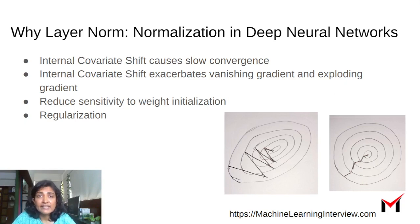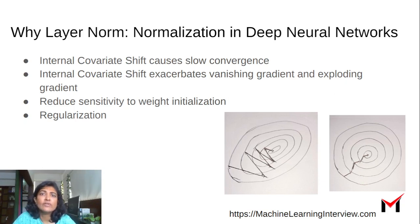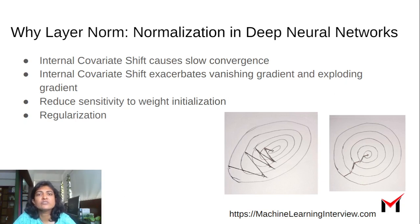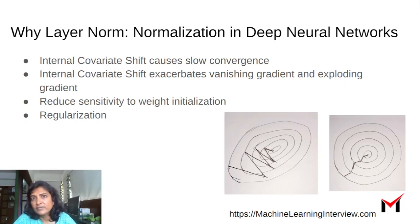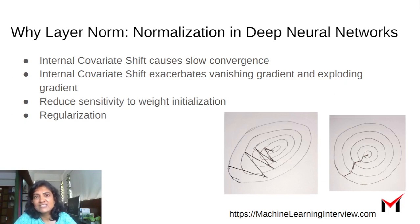In the case of deep neural networks, in the learning process, when we are updating weights of a layer, it might impact the inputs of subsequent layers because the activations of that layer are impacted and hence the inputs to subsequent layers. More importantly, there could be a change in the distribution of inputs to subsequent layers, and this is called the internal covariate shift.